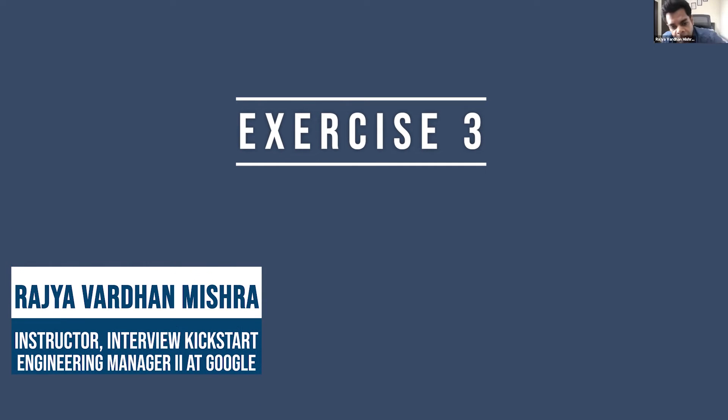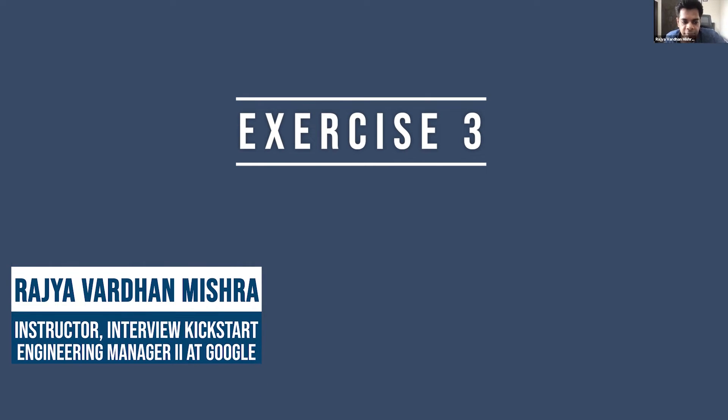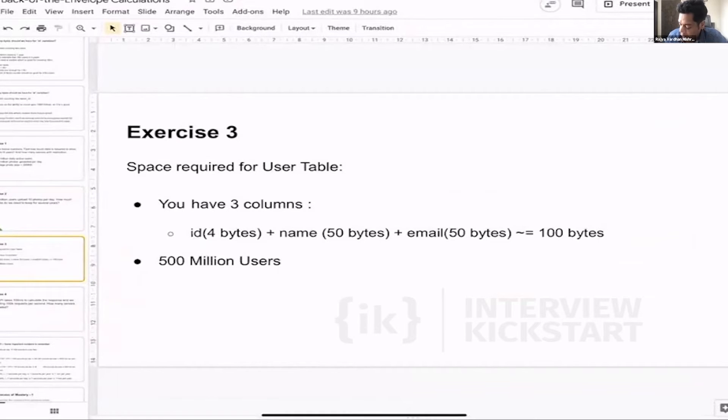Exercise 3 is very similar to the previous exercise. You have three columns for a user table: ID, name, and email, which is around 100 bytes. There are 500 million users. How much space will be required by the user table for six years?